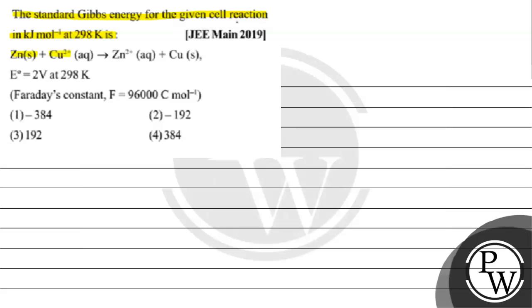Zinc plus Copper 2+ gives us Zinc 2+ and Copper. E naught for the reaction is 2 volt at 298 Kelvin. Faraday's constant value given is 96,000 Coulomb per mole.